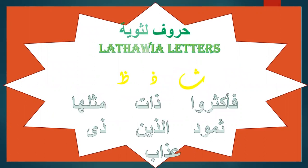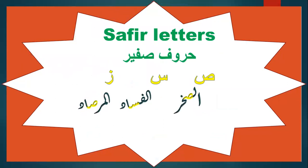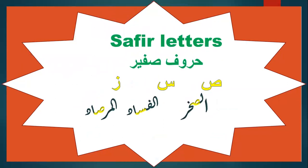Also Qalqala in: يُخْلَقَ، بِالْوَادِ، الْأَوْتَادَ، الْفَسَادَ، عَذَابٍ، لَبِالْمِرْصَادِ. Number two: Huruf Lathawiyya — these letters are pronounced with the tip of the tongue: س، ذ، ض، ث. We can find Huruf Lathawiyya in Surah Al-Fajr. Also: Huruf Safir letters — ص، س، ز — found in: الصَّخْرَةَ، الْفَسَادَ، الْمِرْصَادِ.